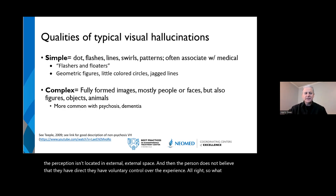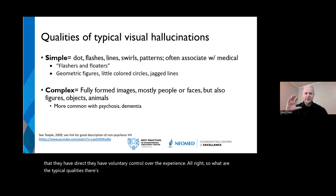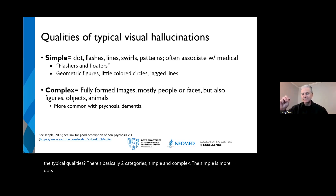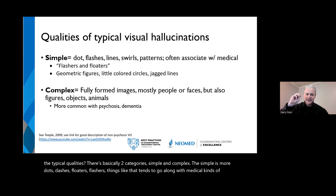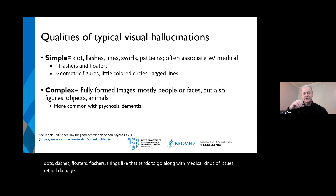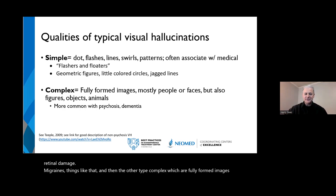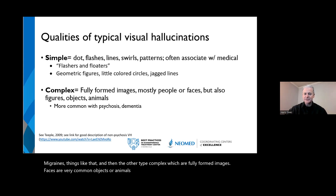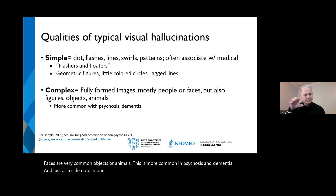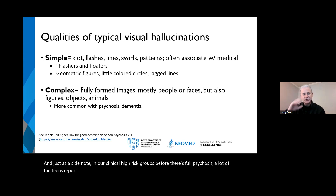There are basically two categories of visual hallucinations: simple and complex. Simple involves dots, dashes, floaters, flashers — things that tend to go along with medical issues like retinal damage and migraines. The other type is complex: fully formed images. Faces are very common, as are objects and animals. This is more common in psychosis and dementia. In clinical high-risk groups before full psychosis, a lot of teens report shadows or spirits.